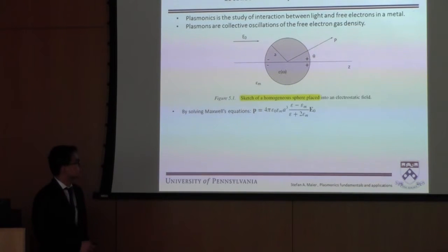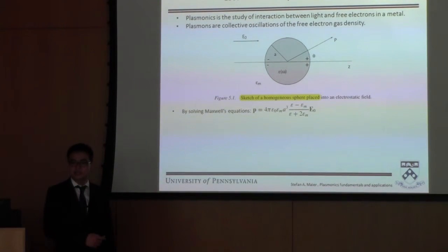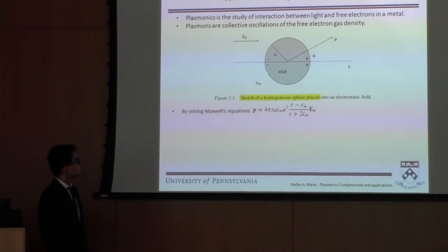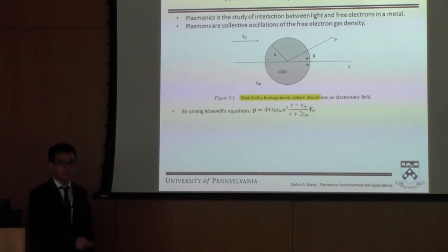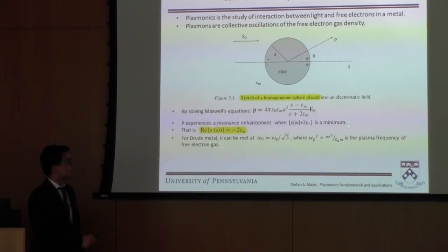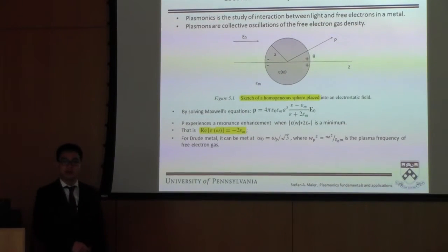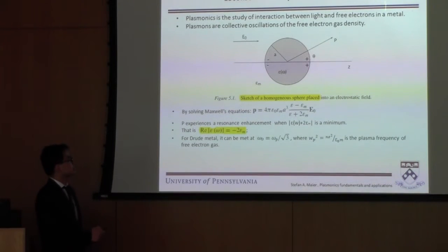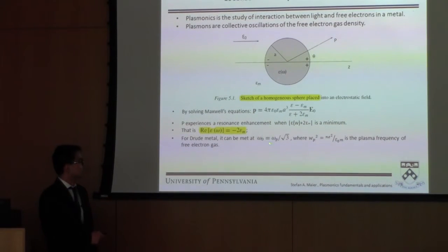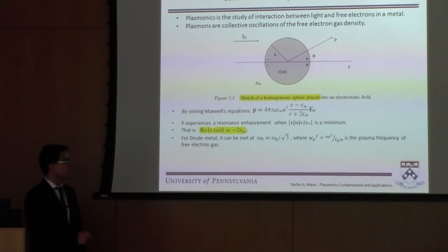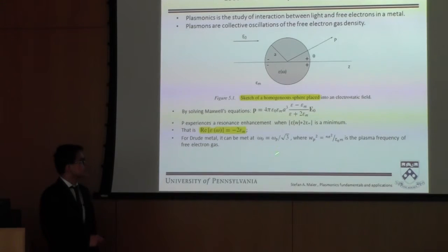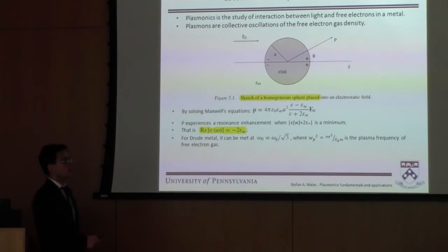This will form an electrical dipole inside this sphere. If we solve Maxwell's equations, we can see the magnitude of this electrical dipole inside the metal sphere. The interesting thing about this equation is that it has a denominator — if this denominator becomes a minimum, then this dipole moment becomes a maximum. That's called a resonance inside this metal sphere. The condition for this denominator to become a minimum is when the incident light frequency equals Omega-P over the square root of 3. At this incident frequency, a lot of charges accumulate on both sides of the metal sphere, causing a localized surface plasmon resonance.